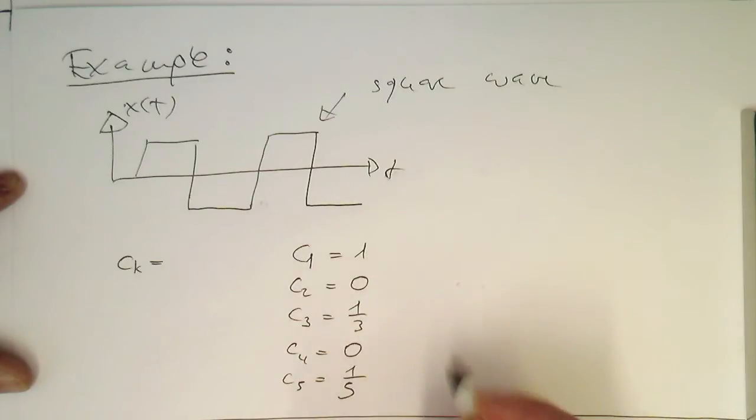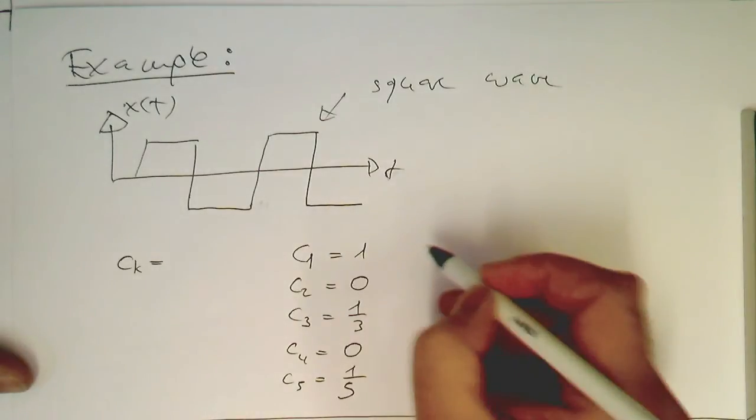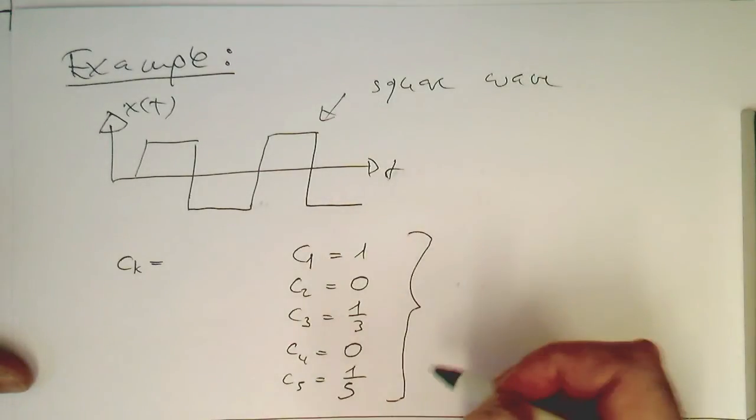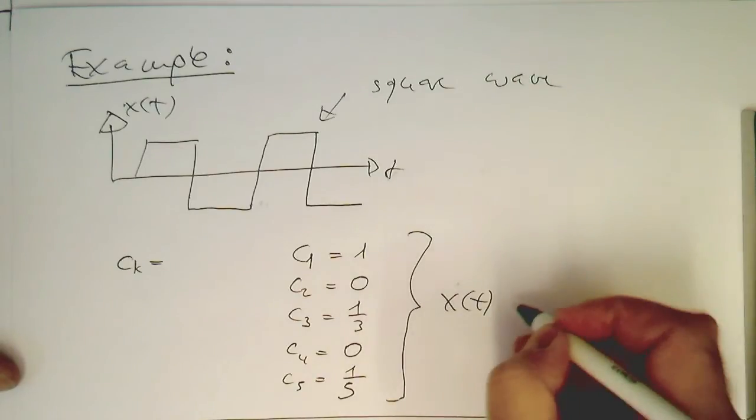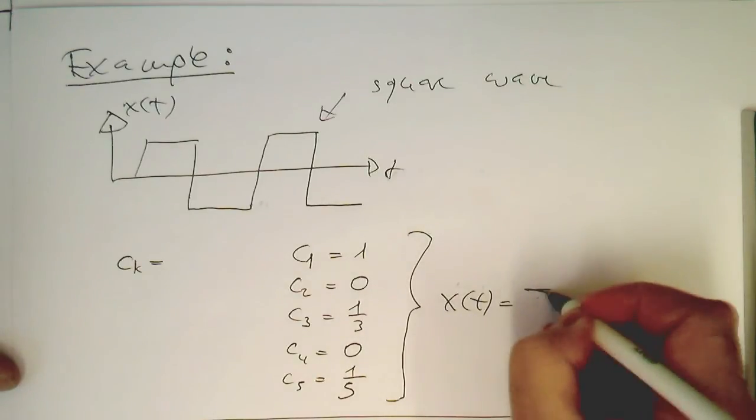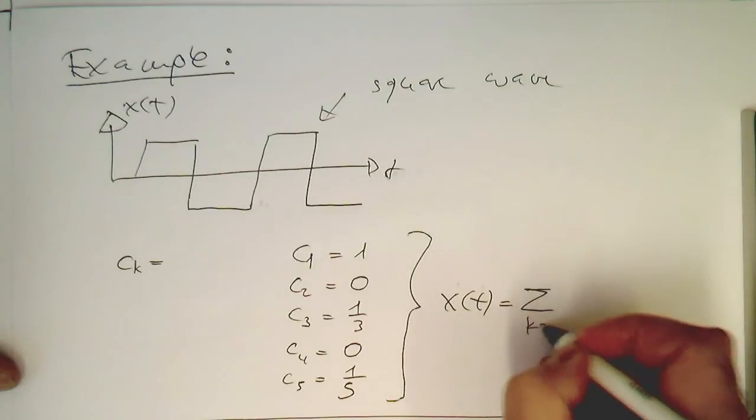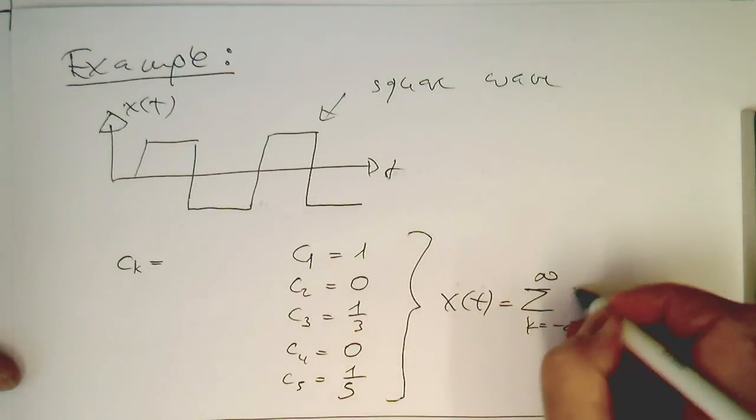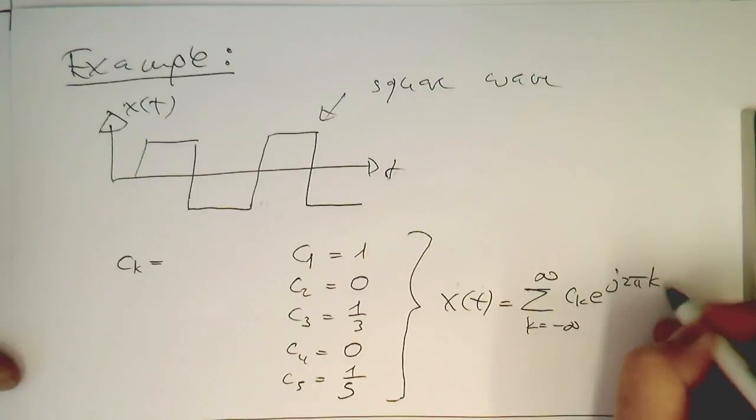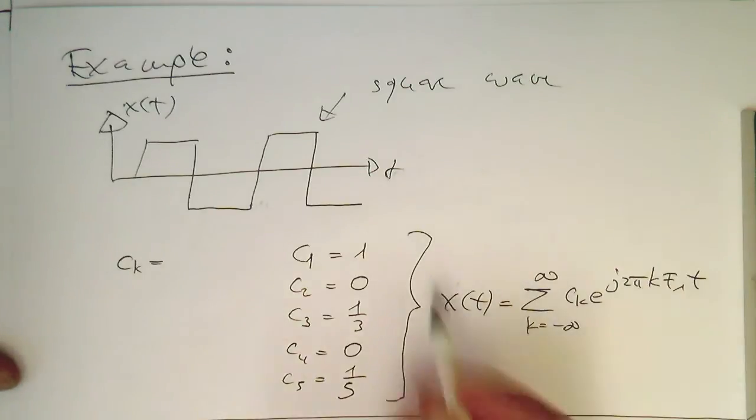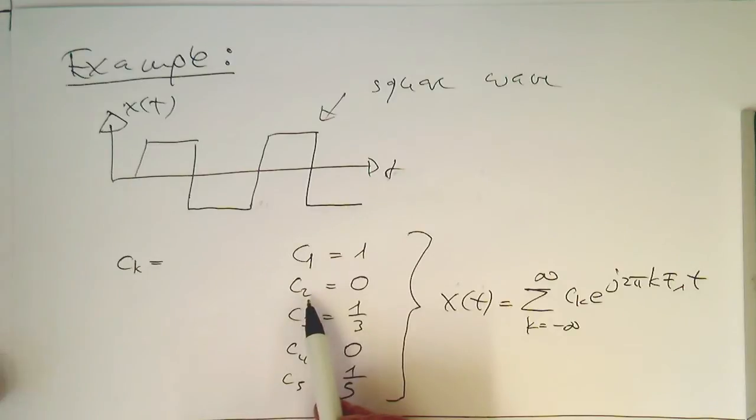You're getting the idea. If I'm using these coefficients for our function x of t, let's write this down: sum from k equals negative infinity to infinity of CK times e to the j 2 pi K F1 T. If I do that, we are getting a square wave.